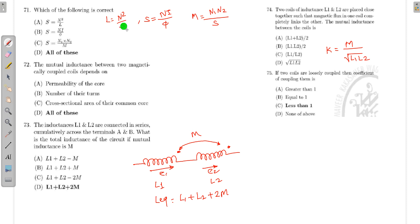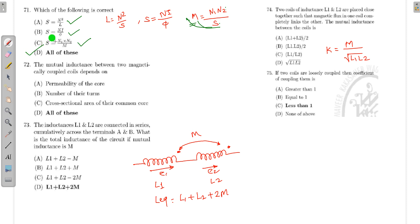Checking the correct formulas: L = N²/S, so S = N²/L — this is correct. S = Nφ/I because reluctance equals MMF divided by flux — also correct. For mutual inductance, M = N1·N2/S, so S = N1·N2/M — also correct. All options are correct in this case.